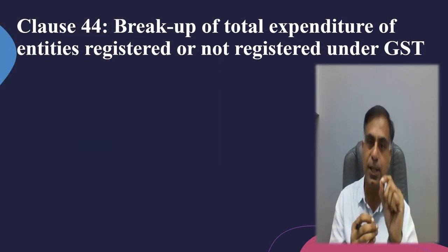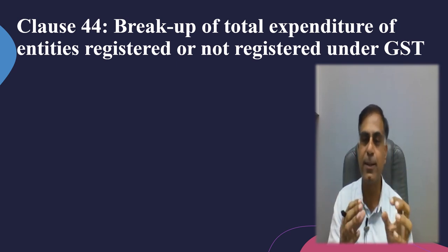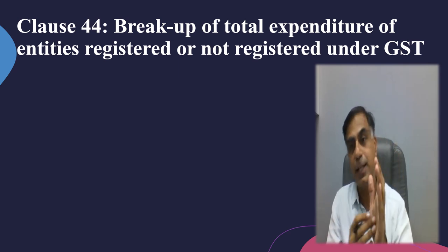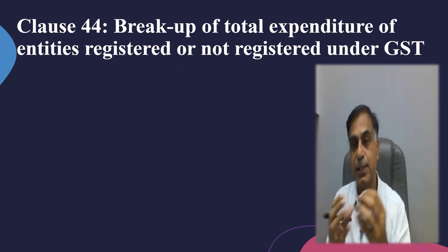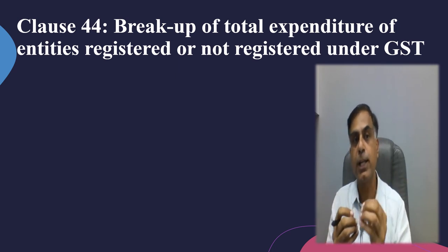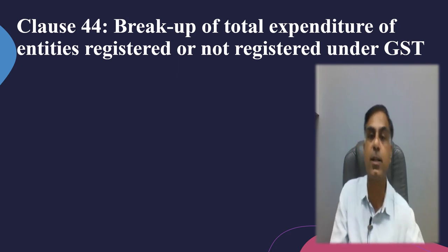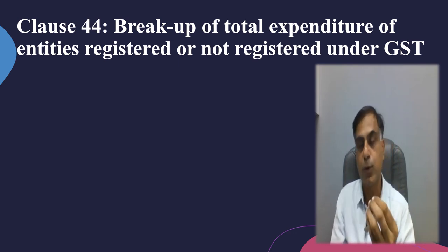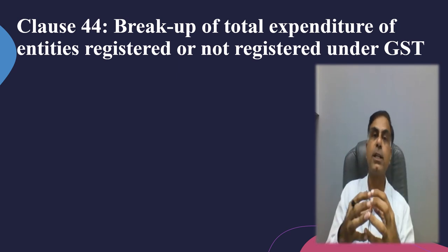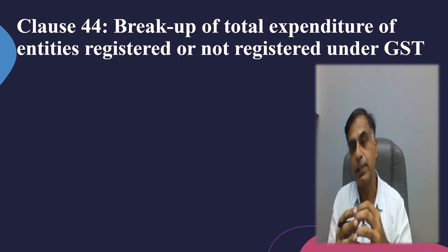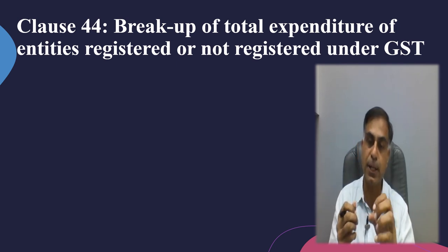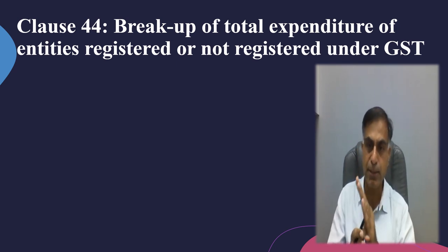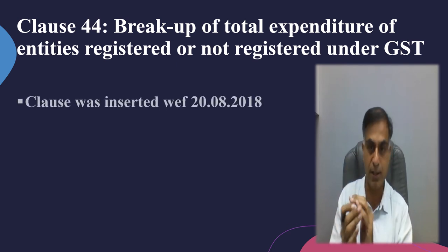I will straight away go to Clause 44 without going into Tax Audit applicability. I am assuming from the beginning that Tax Audit is applicable. So what is Clause 44? The title or description of Clause 44 says: breakup of total expenditure of entities registered or not registered under GST. What the law is asking through Clause 44 is that as an Assessee, whatever is your total expenditure, you are supposed to give the bifurcation of that expenditure — how much is incurred on GST-registered entities and how much on non-GST-registered entities.